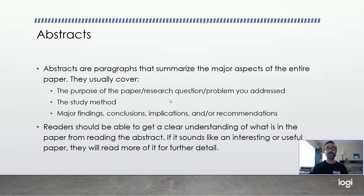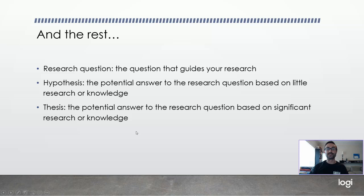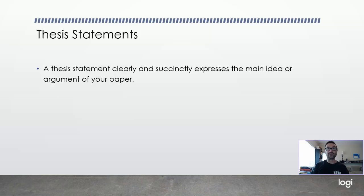When you're reading through the abstract, usually there's some form of a thesis statement, research question, or hypothesis, though sometimes you'll have to read the introduction or method sections to see these more clearly stated. Every paper has a thesis, even if it's not specifically stated in the paper — a thesis is just an argument, the main point you're trying to prove. A thesis statement clearly and succinctly expresses the main idea or argument of a paper. All papers have a research question as well; the author is always answering a question. Often you can deduce the research question from the thesis statement, and vice versa.